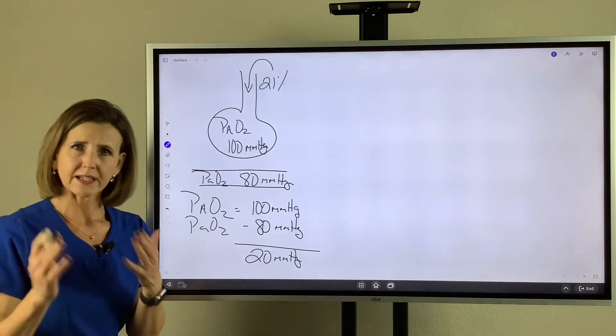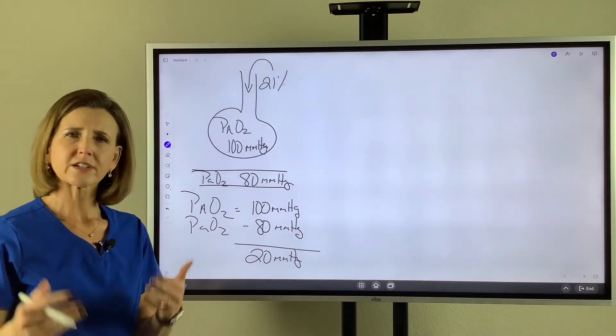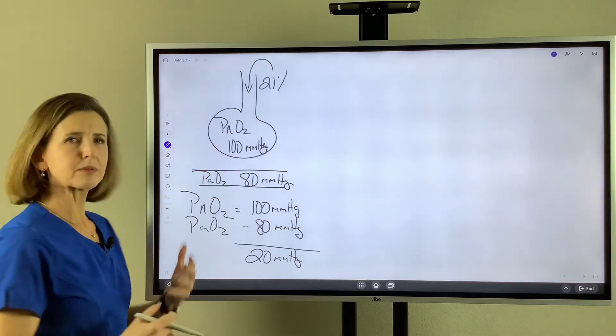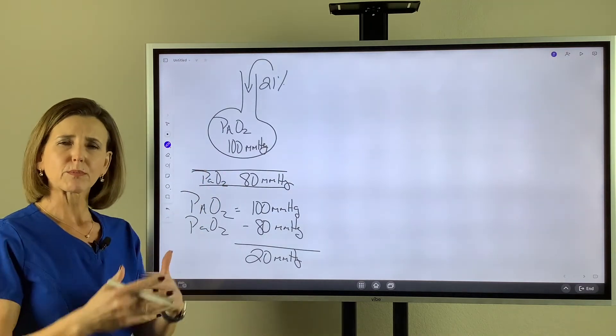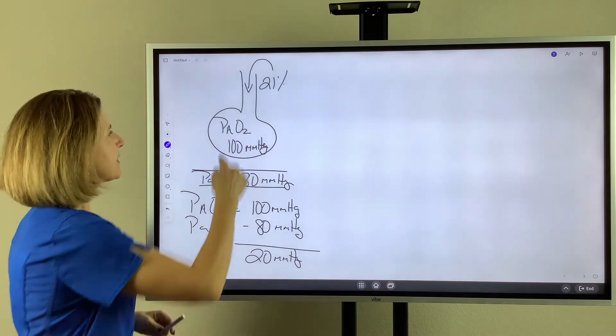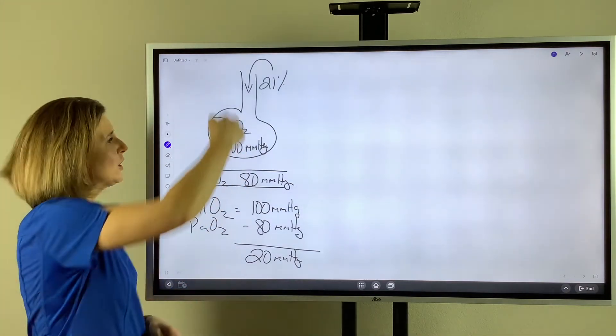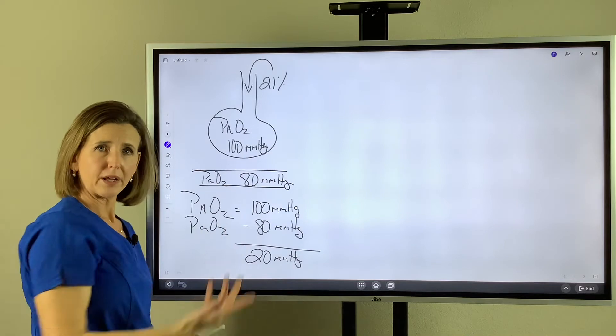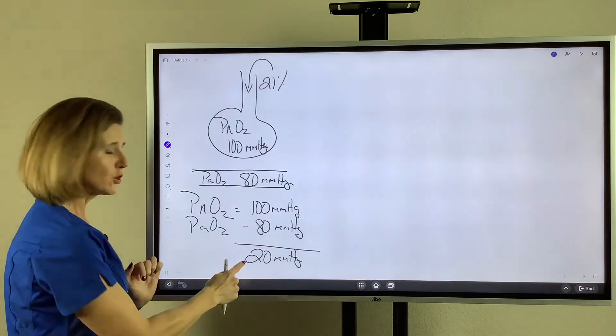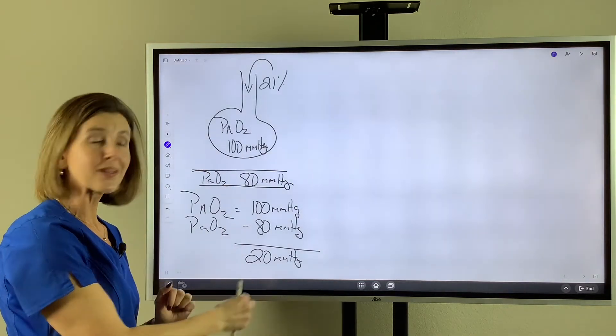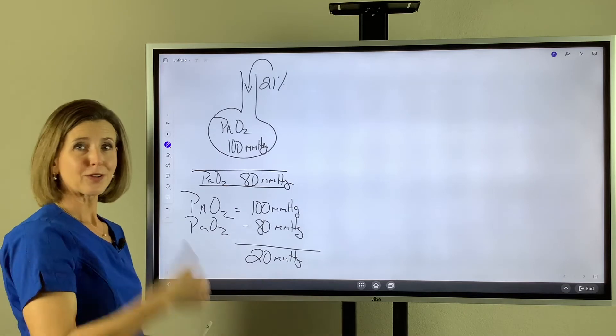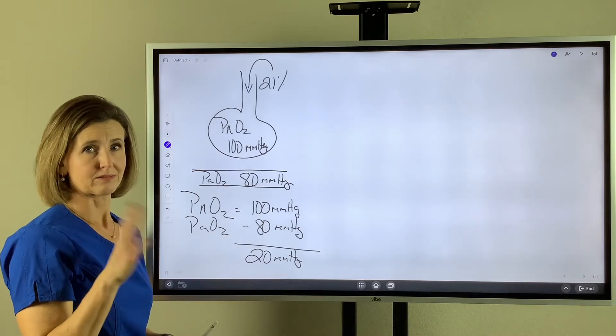This makes sense. If the lung is perfectly normal, the oxygen in the alveoli should cross the AC membrane into the bloodstream. So the difference should be a small number. The smaller the number, the more normal the lungs are.